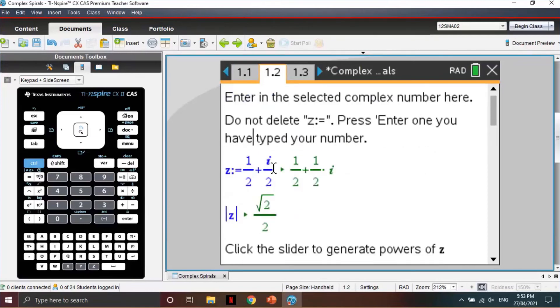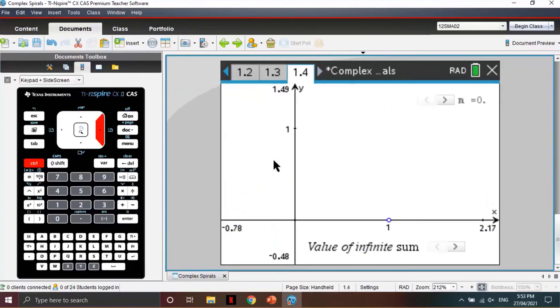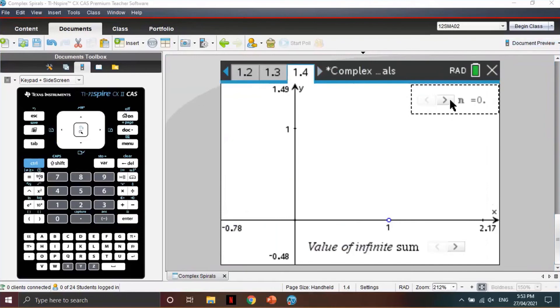And in the map box, they can enter in their complex number. So for example, we can enter in one third plus a third i and press enter to input your complex number. From here, students can navigate to page 1.4. And then by clicking the slider in the top right-hand corner, they can then generate more partial sums and observe and predict the behaviour of the values of partial sums as the number of terms within the partial sums increase.